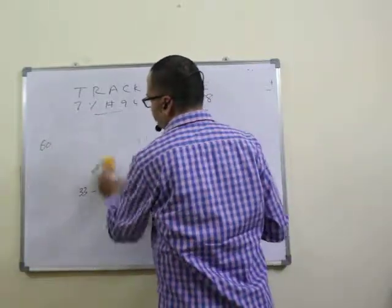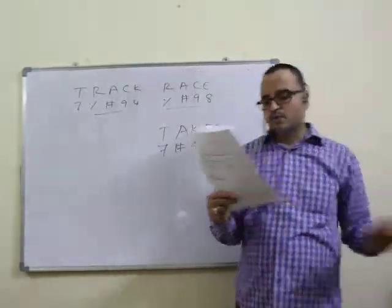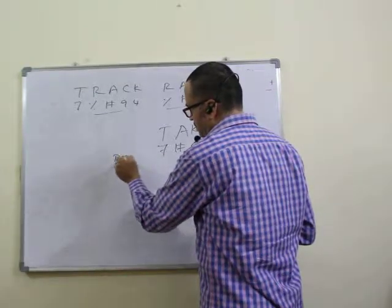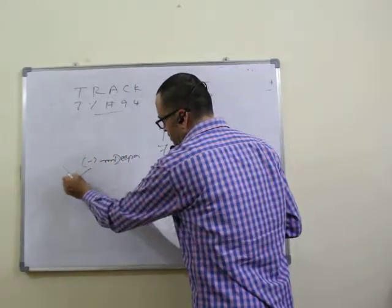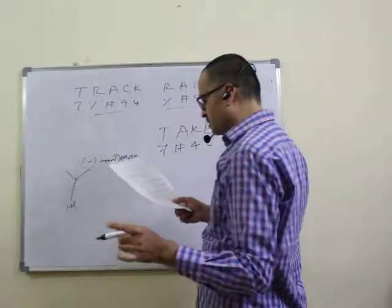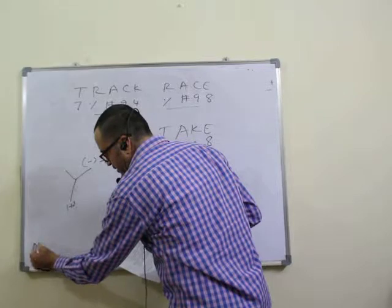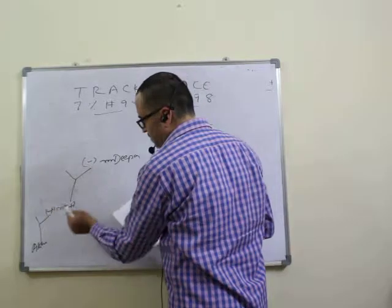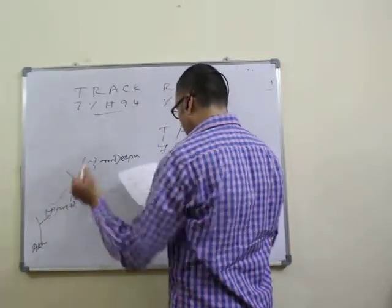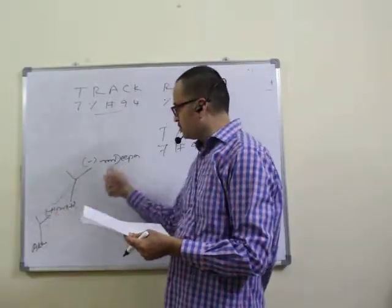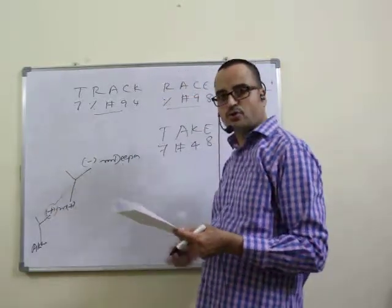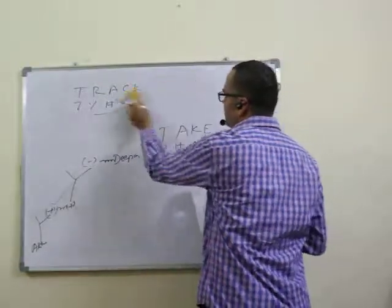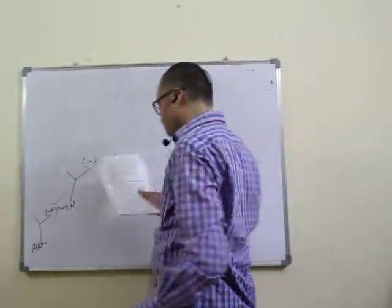Question sixteen: Dheepa said Akil's father is the only brother of my sister's son. So Akil's father is Dheepa's sister's son's brother — meaning he is Dheepa's nephew. So Akil's father is related to Dheepa as nephew.